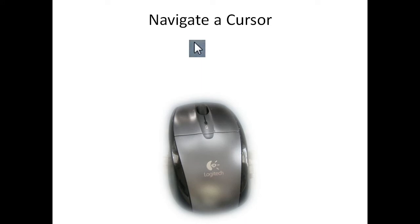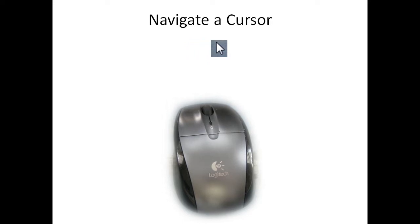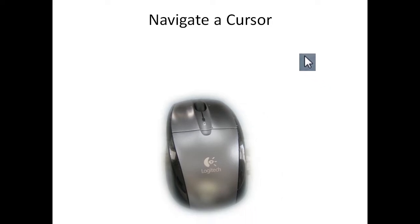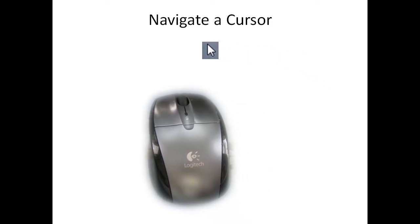How do you navigate a cursor? You take the mouse, hold it with your hand, and move it to the right — and you'll see that the cursor moves to the right. Then when you move it to the left, the cursor moves to the left.